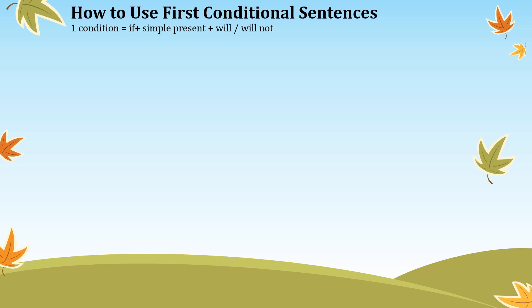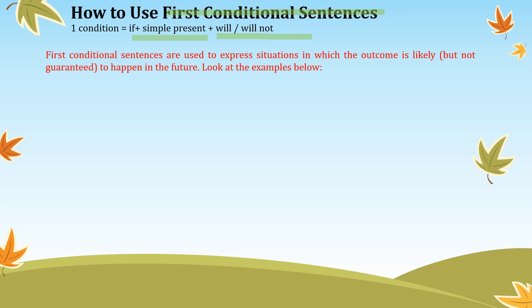How to use first conditional sentences? First conditional sentences are used to express a situation in which the outcome is likely but not guaranteed to happen in the future.